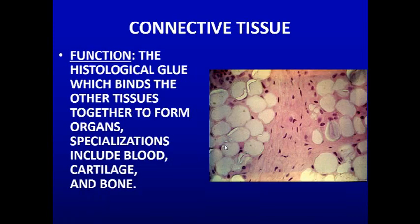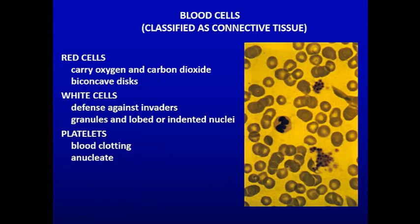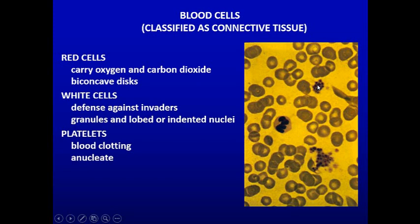Connective tissue is histologic glue — it holds things together. We see fat cells here with nuclei and fat droplets inside, and fibroblastic-type cells that bind and organize things. Specialized connective tissue includes blood, cartilage, and bone. Blood cells include red blood cells involved in oxygen and carbon dioxide transport — they're largely biconcave. Platelets, seen here, have to do with clotting blood. They are anucleate — just a piece of cytoplasm — but act kind of like a cell.